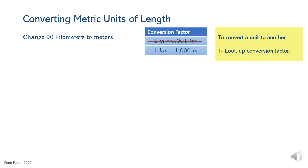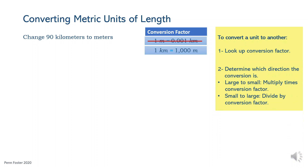The second piece of information needed to set up the calculation is to decide if the problem calls for changing large to smaller units or small to larger units. For conversion direction large to smaller, multiply the given unit quantity times the conversion factor. For the opposite direction, small to larger, divide by the conversion factor.